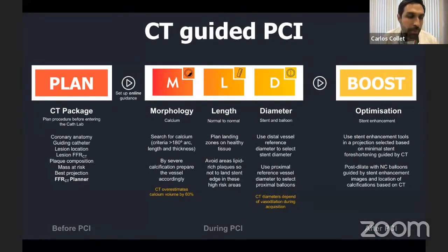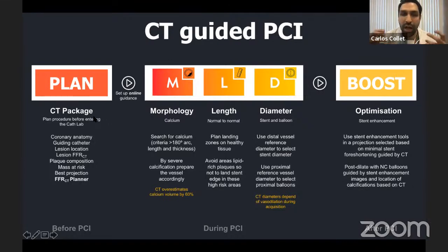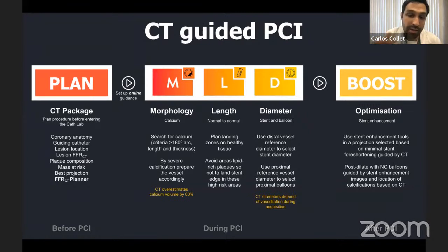We launched the CT-guided PCI program and developed an algorithm we call Plan, MLD, and Boost. The Plan phase involves everything before the cath lab: understanding coronary anatomy, selecting the guiding catheter based on expected disease complexity, understanding lesion location, the functional component via FFR CT, plaque composition, mass at risk, and optimal projections. This is especially important for ostial lesions.